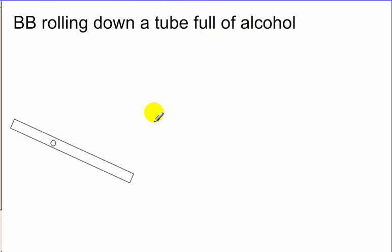So we have a BB rolling down a tube full of alcohol just like our lab a few weeks back. We're going to identify our system as just the BB, nothing else.